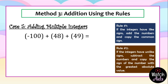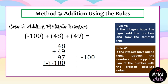Another example: negative one hundred plus forty-eight plus forty-nine. We find the two numbers with the same sign — forty-eight and forty-nine are both positive. We add them first: forty-eight plus forty-nine is ninety-seven. Now we add negative one hundred and positive ninety-seven — unlike signs, so we subtract: one hundred minus ninety-seven is three. One hundred is greater than ninety-seven, so we follow the sign of one hundred, which is negative. Final answer: negative three.